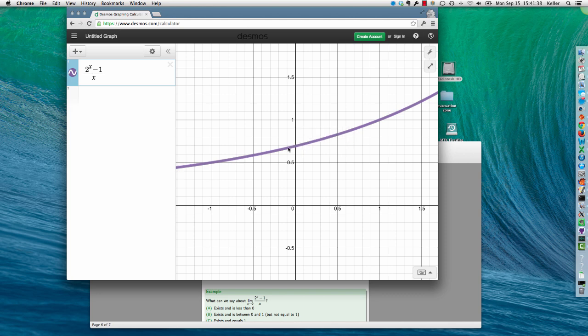So let's see if we can pick up a trend by using a table. So I'm going to use the add item here and make a table. And I'm going to go back up here. I'm going to call this function f(x) equals.